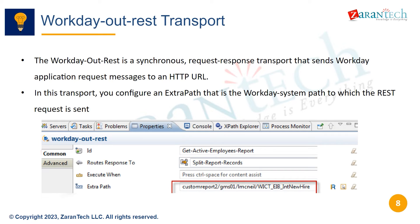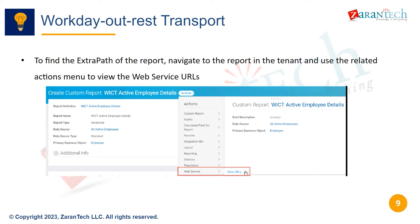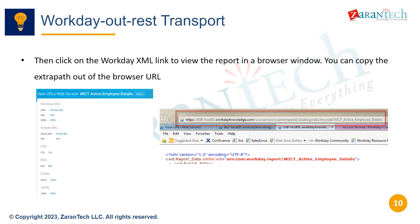In this transport, you configure an extra path that is the Workday system path to which the REST request is sent. To find the extra path of the report, navigate to the report in the tenant and use the related actions menu to view the web service URLs. Then click on the Workday XML link to view the report in a browser window.